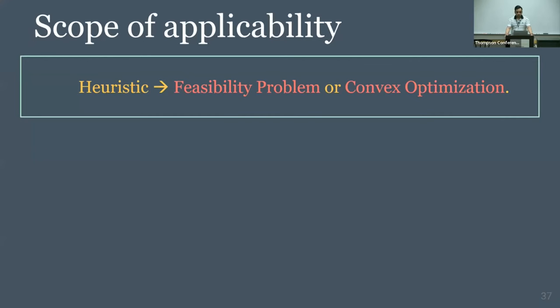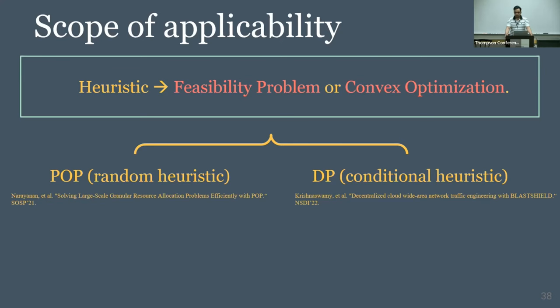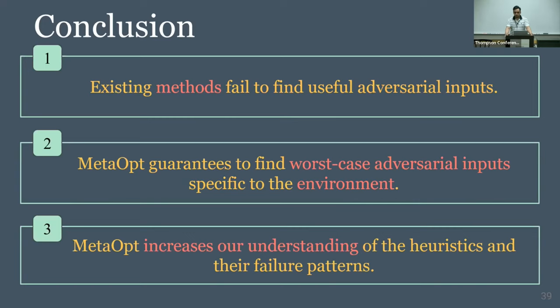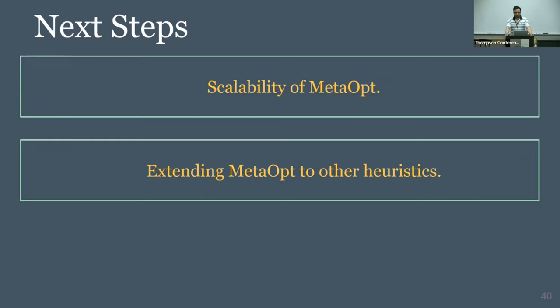METOP can be applied to heuristics that can be reformulated either as a feasibility problem or a convex optimization problem. We believe many existing heuristics using standard optimization techniques can be translated in either of these two ways. To show generality, we apply it to randomized heuristics — specifically POP — and conditional heuristics — specifically demand pruning. METOP improves our understanding of heuristics and their failure patterns. We are actively working on improving scalability of METOP and extending it to other heuristics potentially beyond traffic engineering.